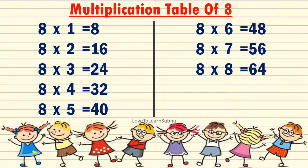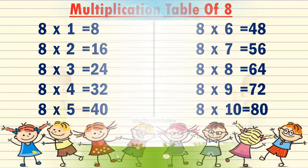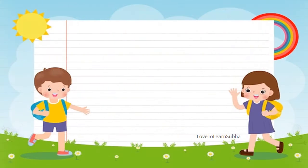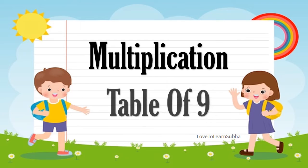8 8's are 64, 8 9's are 72, 8 10's are 80. Multiplication table of 9.